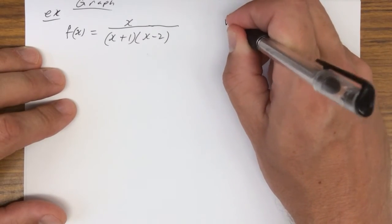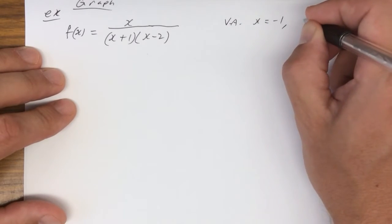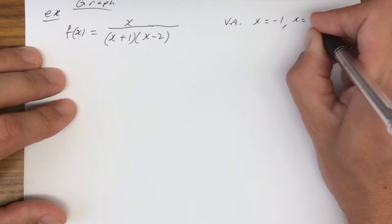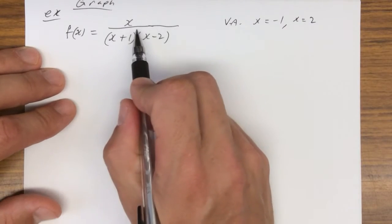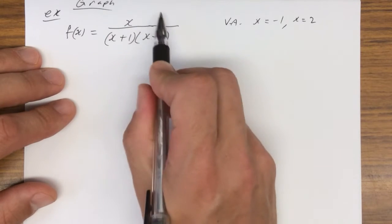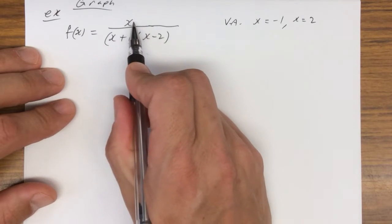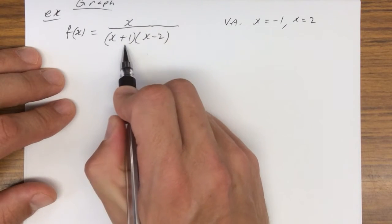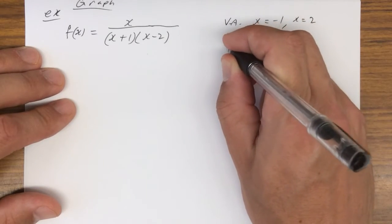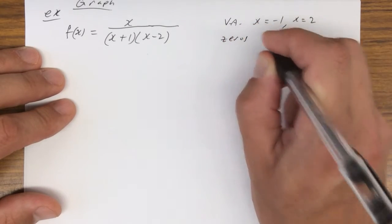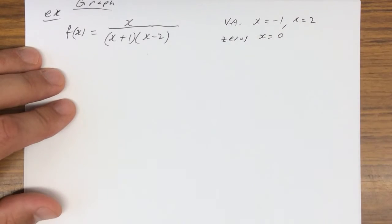In between, we're going to have two vertical asymptotes. The vertical asymptotes are going to be x equals negative 1 and x equals 2. This function equals 0 when x equals 0, so the zeros are x equal to 0.